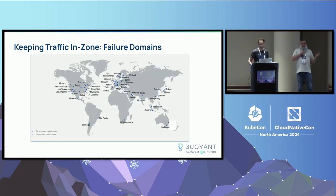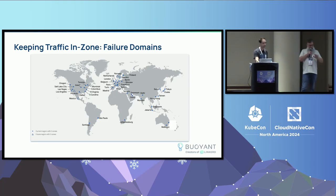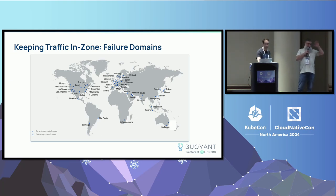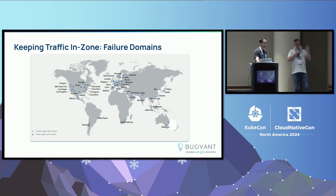Keeping traffic in zone — what are failure domains? There are three big ones. First is your cloud provider — topology-aware routing isn't going to fix that if your cloud provider goes down. Second is regions — that's something to consider outside the cluster. The one we care about is the zone, or availability zone. Kubernetes knows about that — there's a label on your nodes that tells it which zone it's in, like US-East-1A. If you're running EKS, you're probably spread across three zones. When you run traffic across zones, there's a cost associated with that.